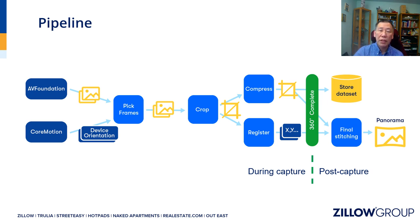It uses AV Foundation to access raw input frames, while Core Motion is used to provide processed IMU data that aid image registration. To simplify registration, we capture many images — specifically 540 frames — with an average shift of only two-thirds of a degree. This allows us to crop and use only the middle narrow vertical strip of each frame. Pairwise frame registration is done as each frame is captured and cropped. Once capture is done, the first-last frame transform is computed to close the loop, and the panorama is stitched.